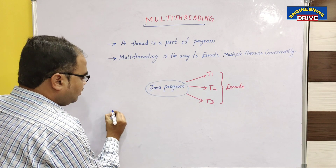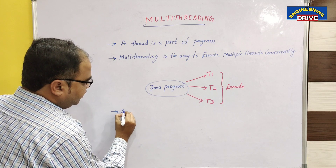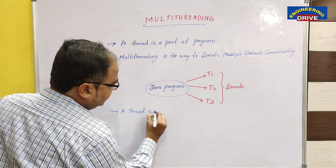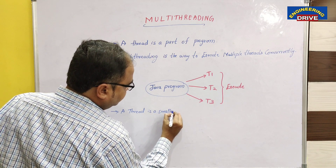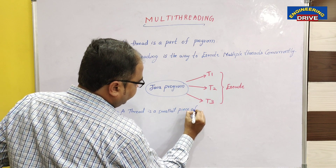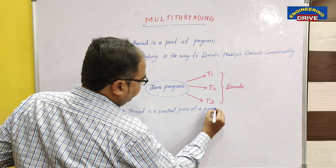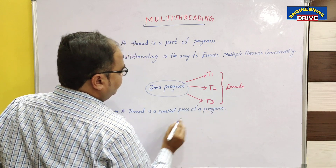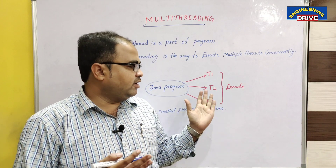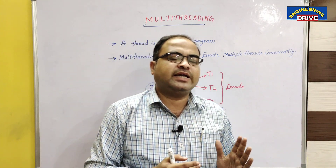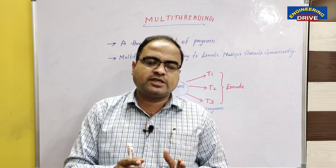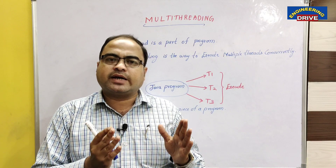In simple terminology, a thread is the smallest piece of a program. So when we are writing a Java program, we can define a thread as the smallest piece of a program. Depending on the complexity and length of the program, we can divide that program into individual units called threads, and we can execute them concurrently.